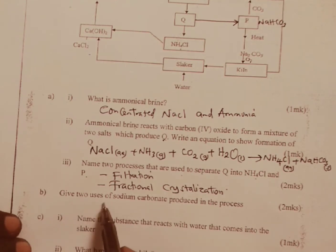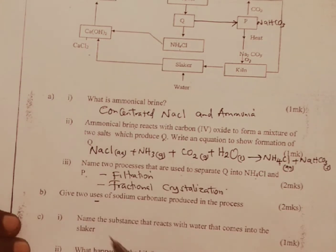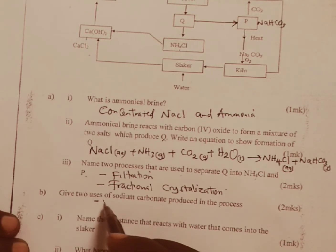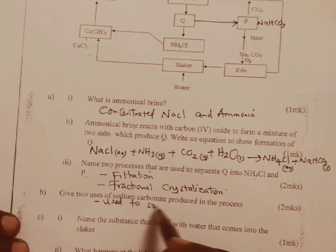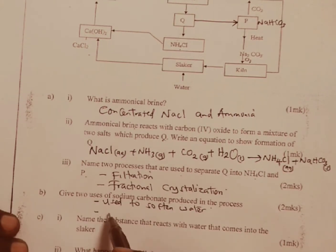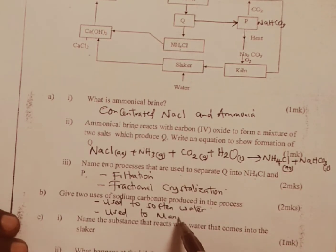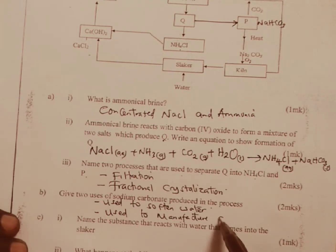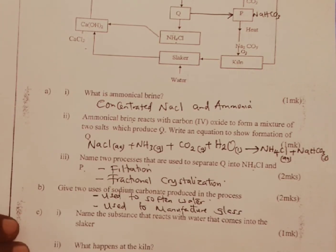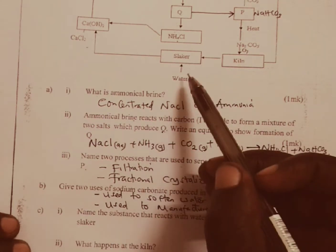Give two uses of sodium carbonate produced in the Solvay process. Number one: sodium carbonate can be used to soften water — used in softening water. Number two: it can be used to manufacture glass, among other uses.